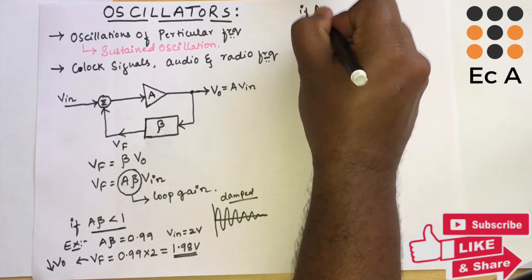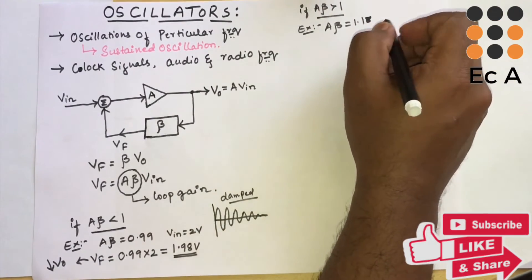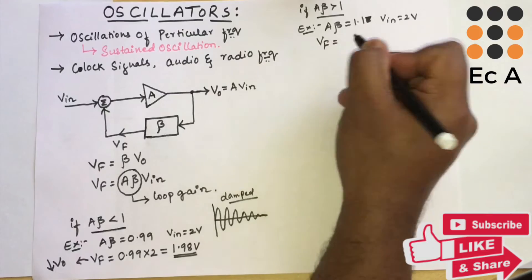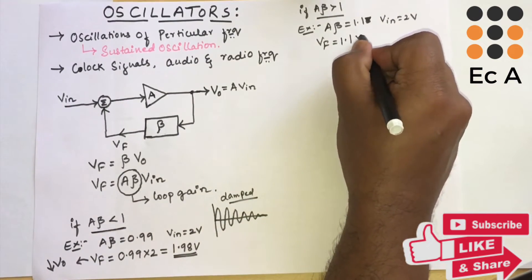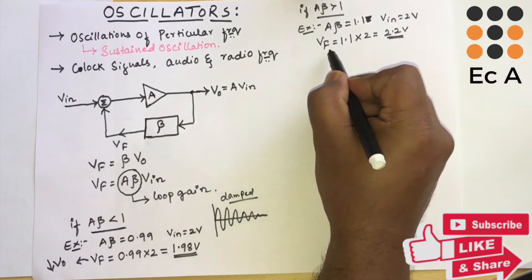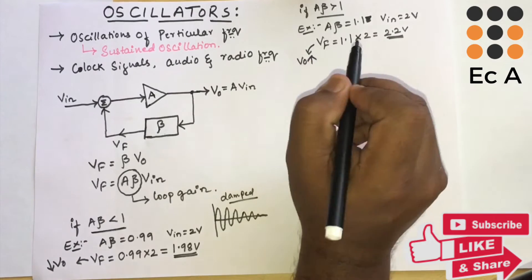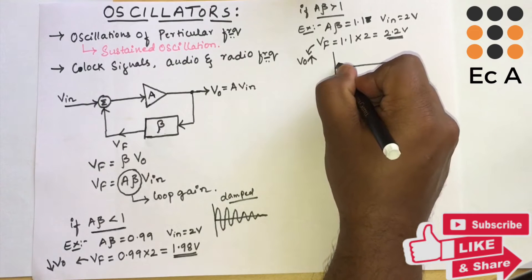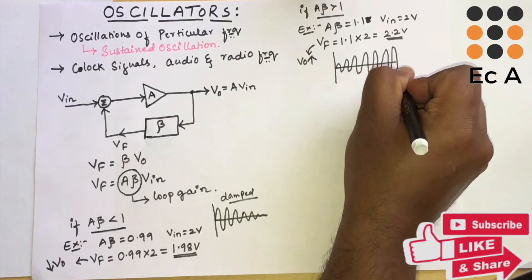If A·beta is greater than 1 — for example, A·beta equals 1.1 — and input voltage is 2 volts, then Vf equals 1.1 times 2, which is 2.2 volts. As you can see, Vf is increasing, so V0 will also increase. For this case we will get an oscillation which is gradually increasing.